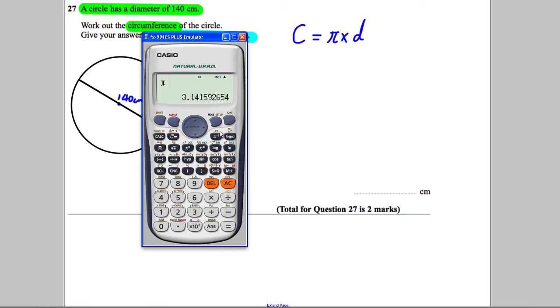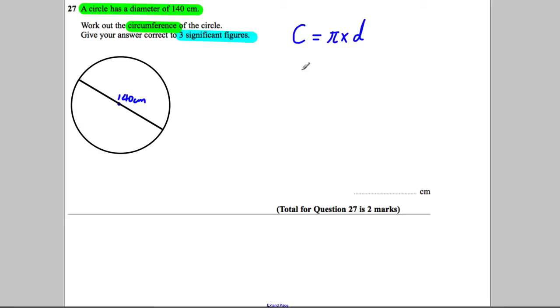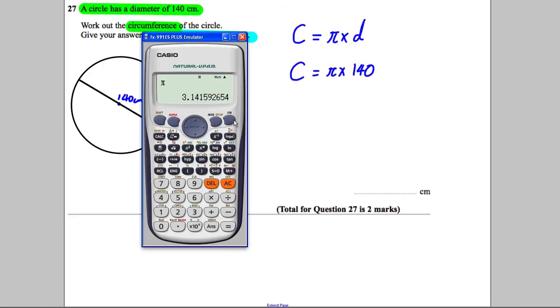C equals π times diameter, so the circumference is going to be π multiplied by 140. Get our calculator, find pi, π multiplied by 140. Our calculator may say 140π.